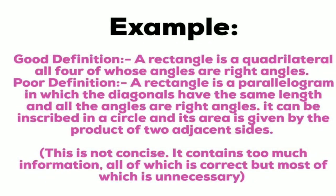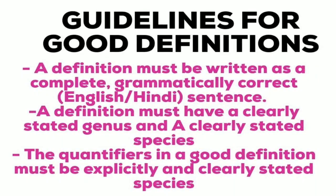For example, 'a rectangle is a quadrilateral all four of whose angles are right angles' is a good definition because it covers the main points. A poor definition would be: 'a rectangle is a parallelogram in which diagonals have the same length, all angles are right angles, it can be inscribed in a circle, and its area is given by the product of two edges' - this contains unnecessary, irrelevant information.